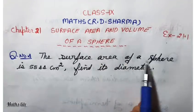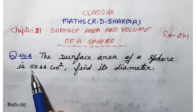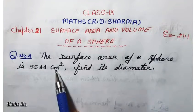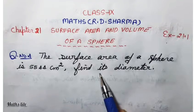The surface area of a sphere is 5544 square centimeter. Find its diameter.